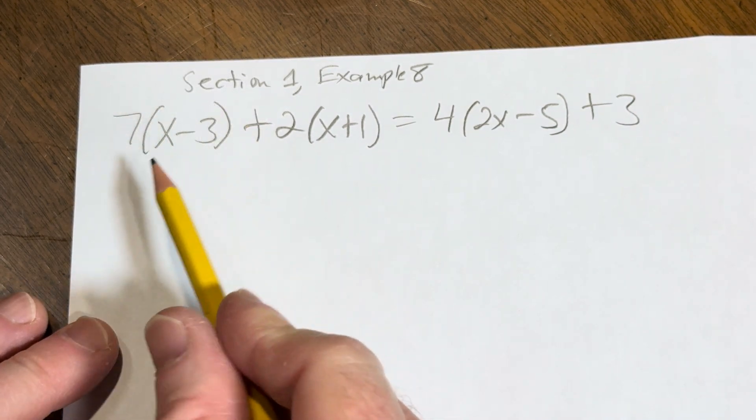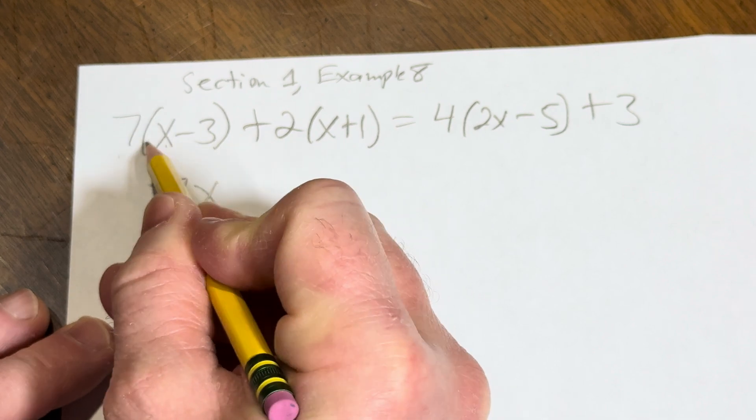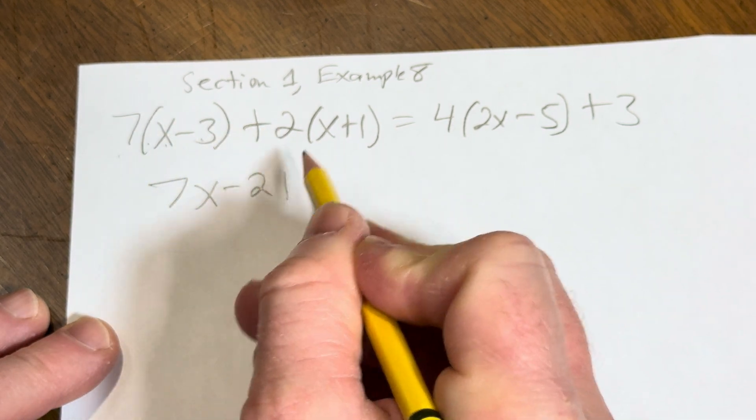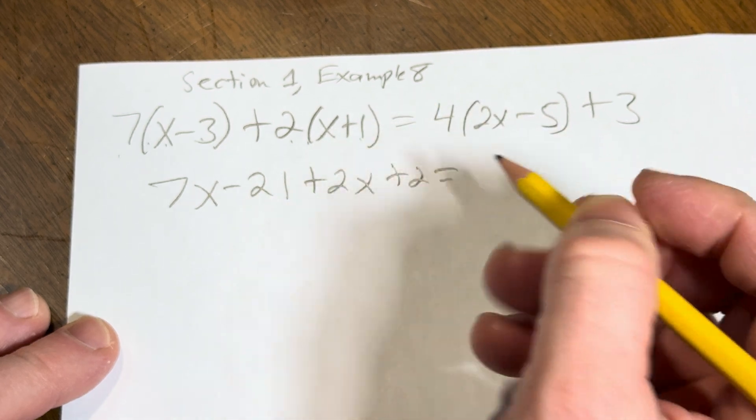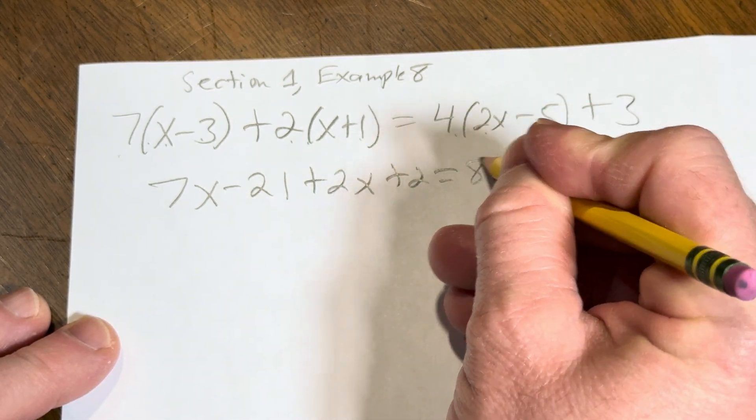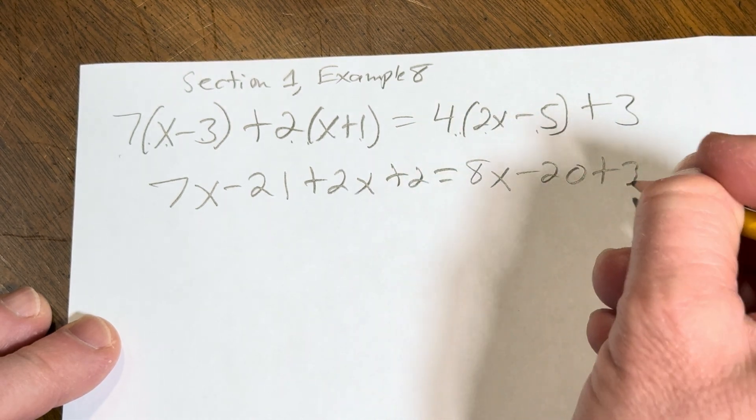We'll start by distributing here. So 7 times x is 7x, 7 times minus 3 is -21, 2 times x is 2x, 2 times 1 is 2. There we go, good stuff. 4 times 2x is 8x, 4 times negative 5 is negative 20, and then we still have the plus 3.